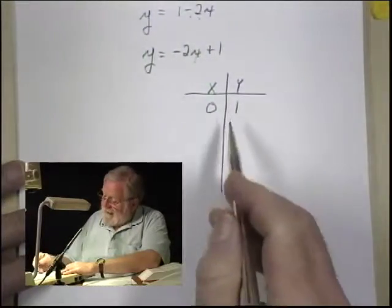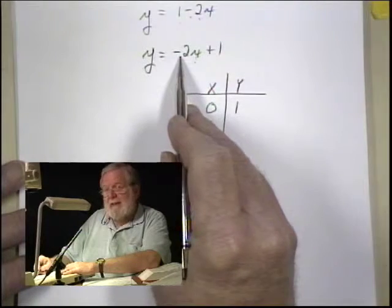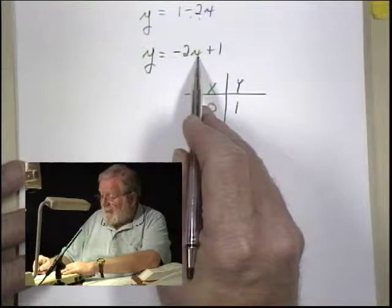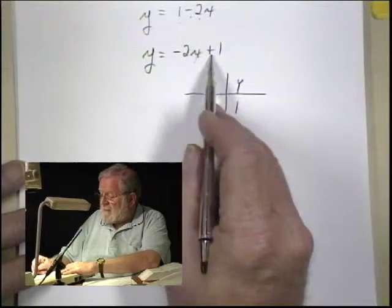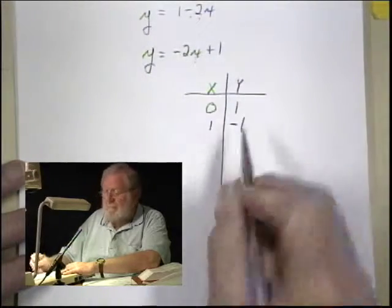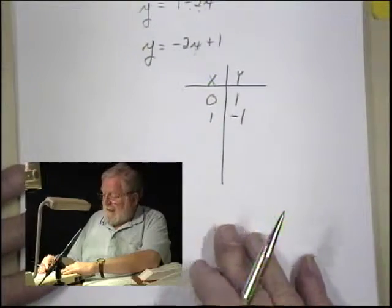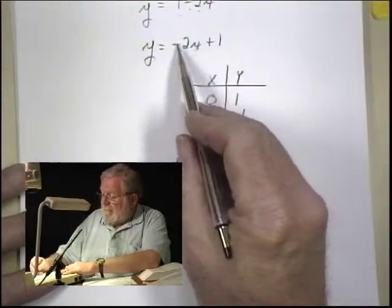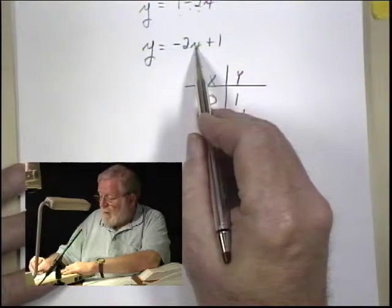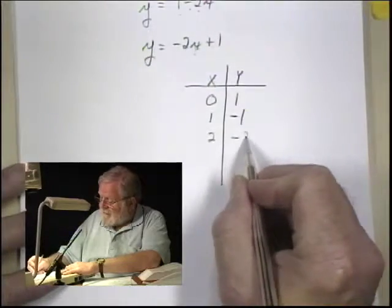And if we say x equals 1, we'd have minus 2 times 1, which is minus 2, plus 1. Minus 2 plus 1 is minus 1. And if we had x equal to 2, we'd have minus 2 times 2 is minus 4, plus 1 would be minus 3.